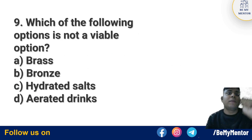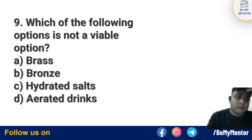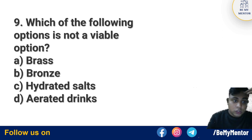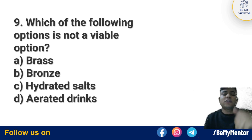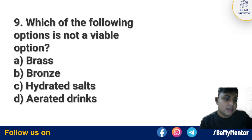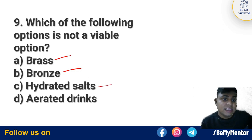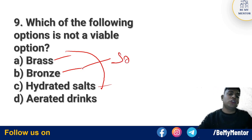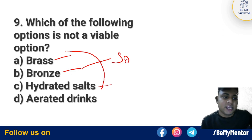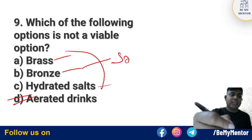Question number 9: Which of the following options is not available — find the odd one out. The options include brass, bronze, and hydrate salt. These three are the same type of solutions with the same solution properties. You need to tell which type of solution is not available. Option number D is the correct answer — that is the odd one out.